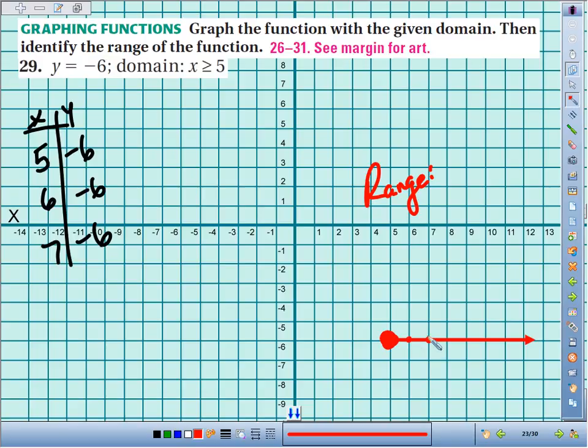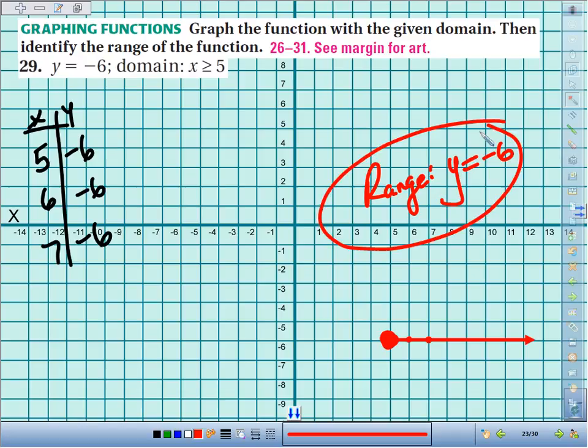You could go to infinity in the right positive direction, and no matter where you go, the y value is always going to be negative 6. We'd signify that with the equation, y equals negative 6, no matter what.